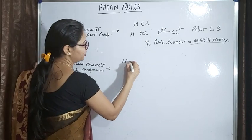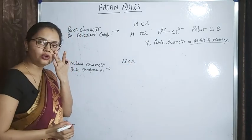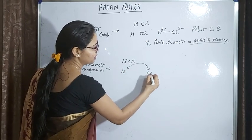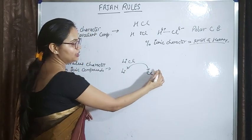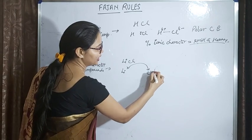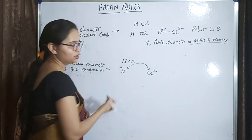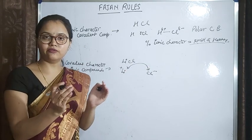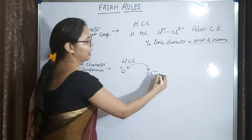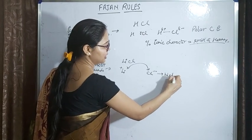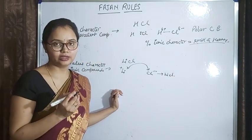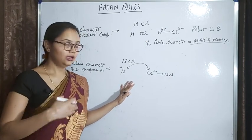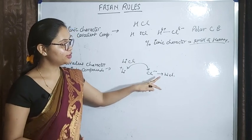Let's take one ionic compound like LiCl. In an ionic compound, one atom transfers its electron to another atom. After gaining the electron, it will have a negative charge, and the other will have a positive charge. Because of these positive and negative charges, they bind with each other and form an ionic compound — Li⁺ and Cl⁻. Today we will talk about what happens after the formation of the ionic compound.